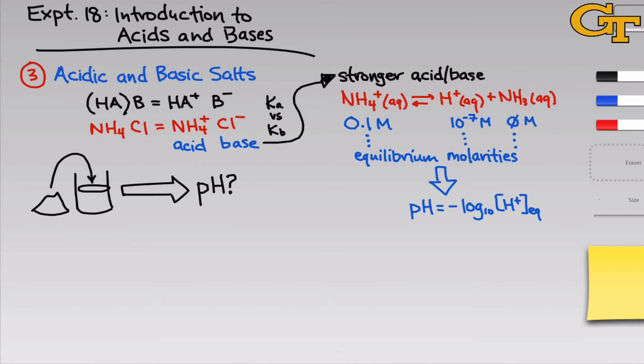Qualitatively, what we can say is that if the cation is a stronger acid than the anion is a base, the pH will be less than 7 because the acidic behavior of the cation is dominating. On the other side, if the anion is a stronger base than the cation is an acid, then the pH ought to be greater than 7 because the basic behavior of the anion is going to dominate.